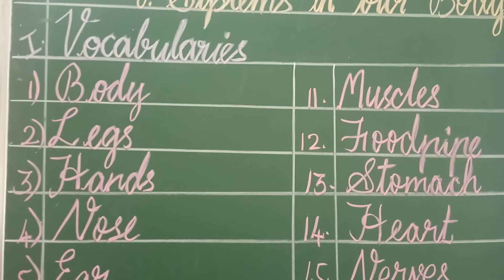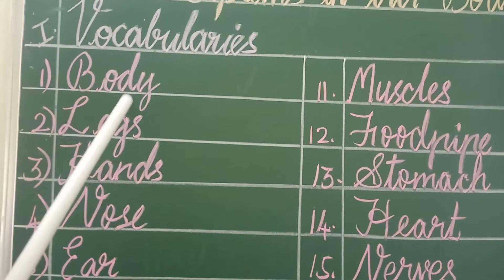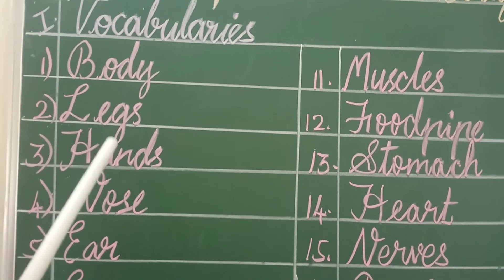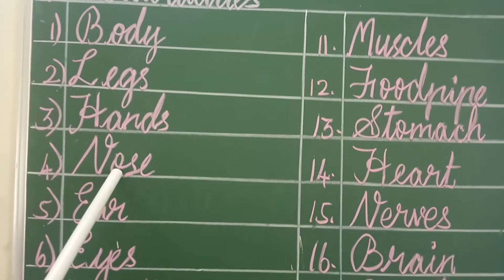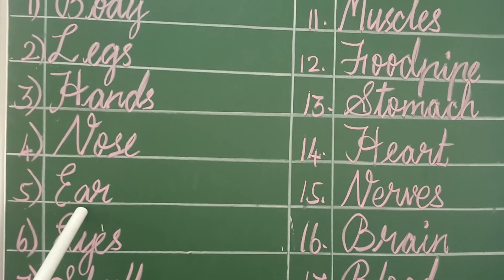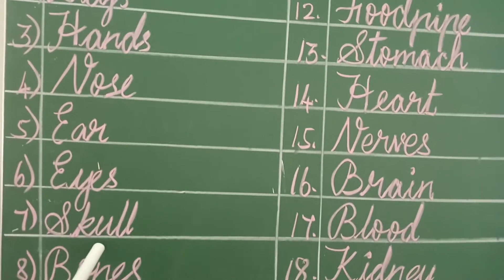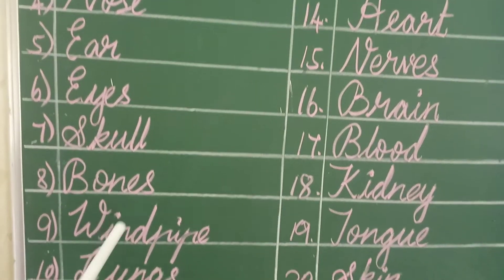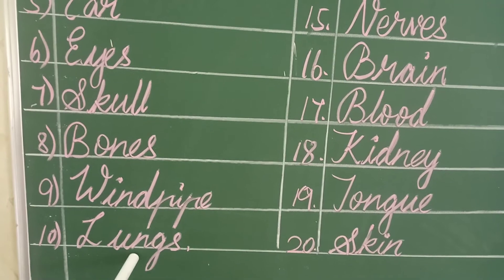Let's revise the vocabulary. Body, legs, hands, nose, ear, eyes, skull, bones, windpipe, lungs.